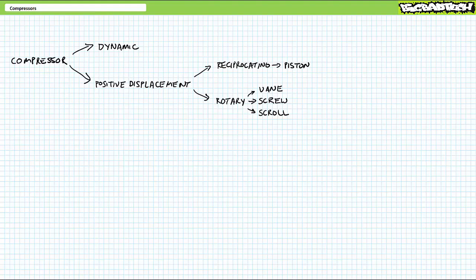Compressors are divided into two general families: dynamic and positive displacement. Dynamic compressors, like turbines or centrifugal compressors, are not within the scope of this particular lecture and we will limit our discussion to positive displacement compressors. Within the positive displacement branch, there are countless variations you might encounter in the field. However, the main types are reciprocating piston-style compressors and rotating vane and screw-type compressors.